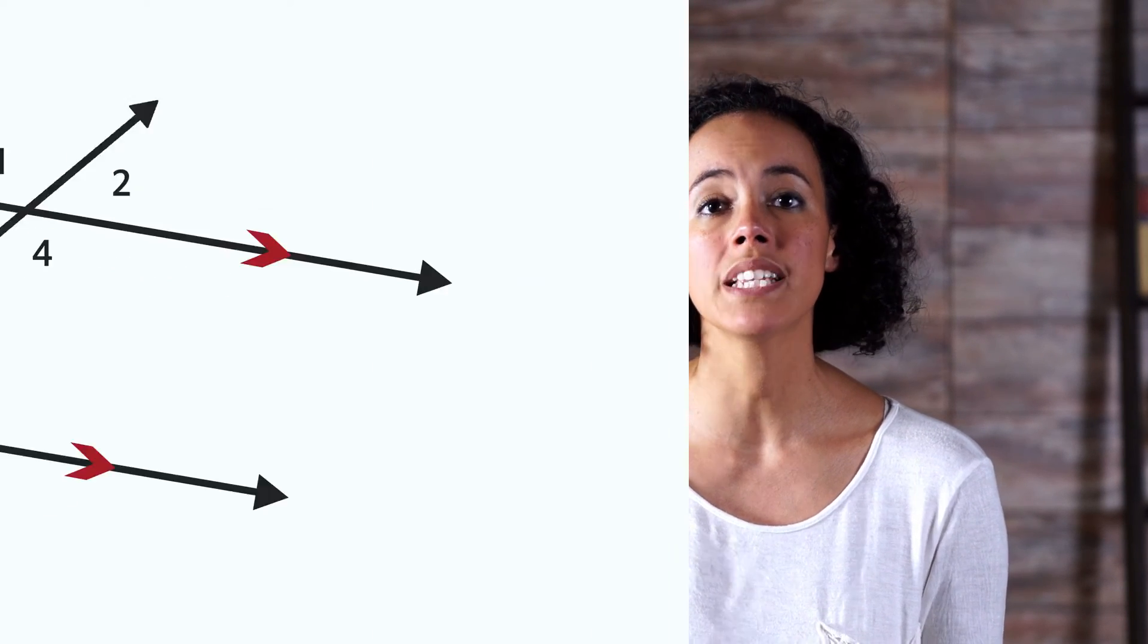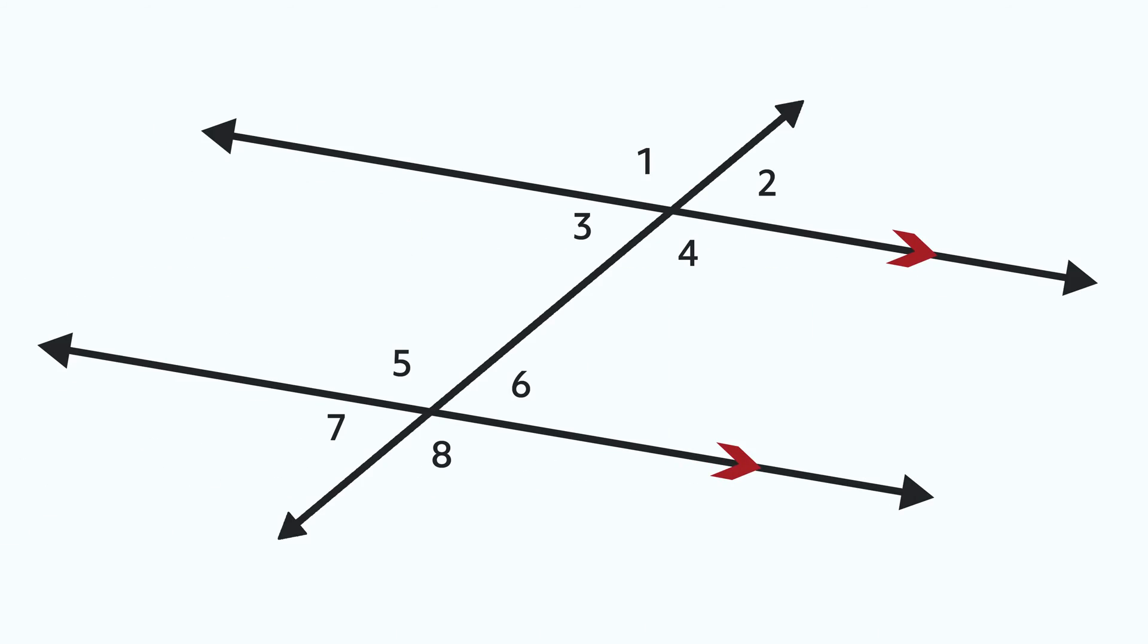it allows us to know a lot about the eight angles created by the intersecting lines. But before we get to that, let's look at the eight angles. We can see they are in two groups of four. Angles one through four and angles five through eight.